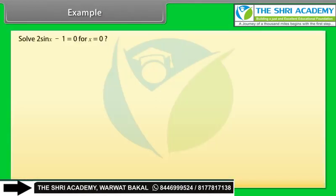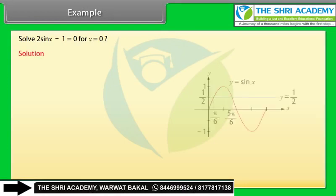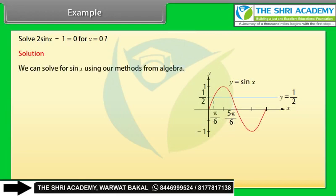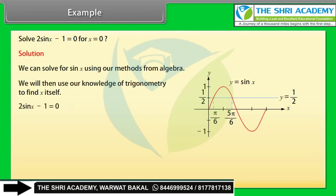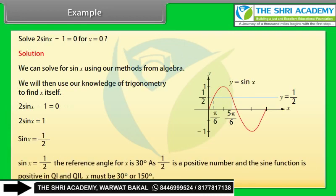Example: Solve 2sin x − 1 = 0. Solution: Solving algebraically, 2sin x = 1, so sin x = 1/2. The reference angle for x is 30°. Since 1/2 is positive and the sine function is positive in quadrants 1 and 2, x must be 30° or 150°.